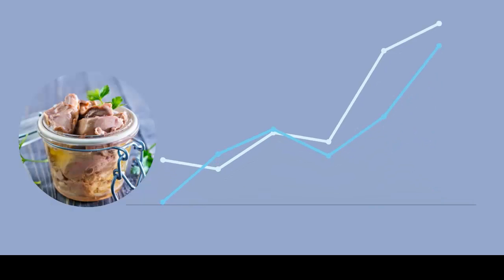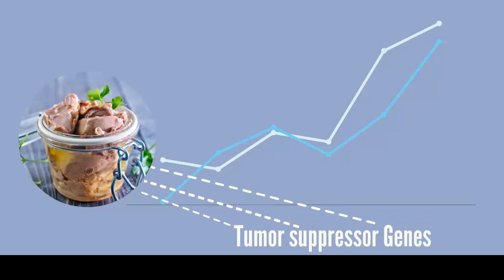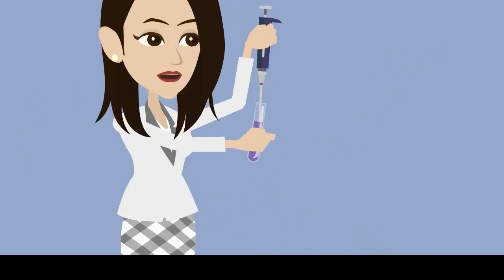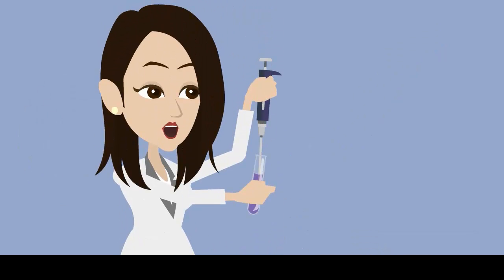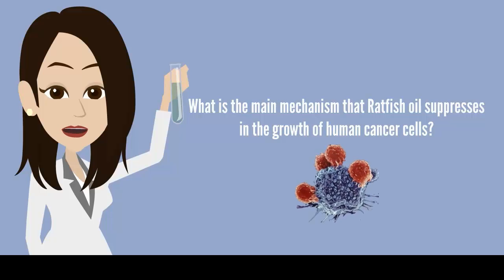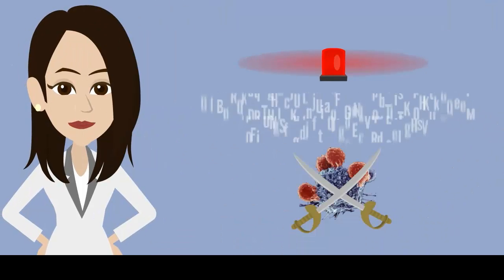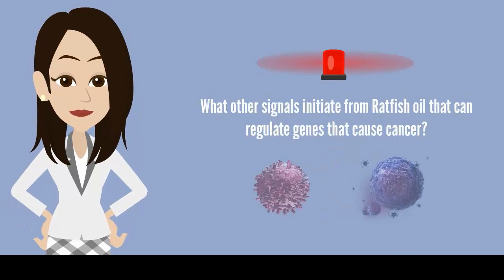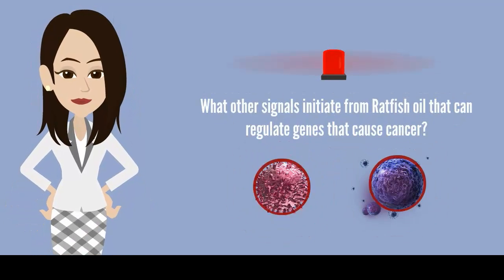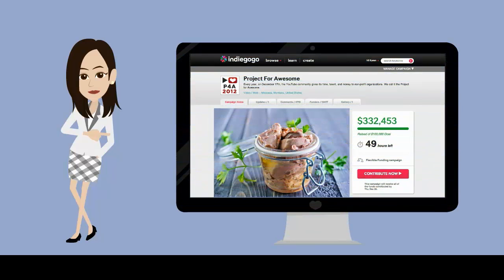Promising results showed the oil's influence on expression of tumor suppressor genes and much more. However, further testing needs to be done to determine things like what is the main mechanism that ratfish oil suppresses in the growth of human cancer cells, what other signals initiate from ratfish oil that can regulate genes that cause cancer, and other tests found in our Indiegogo campaign info.